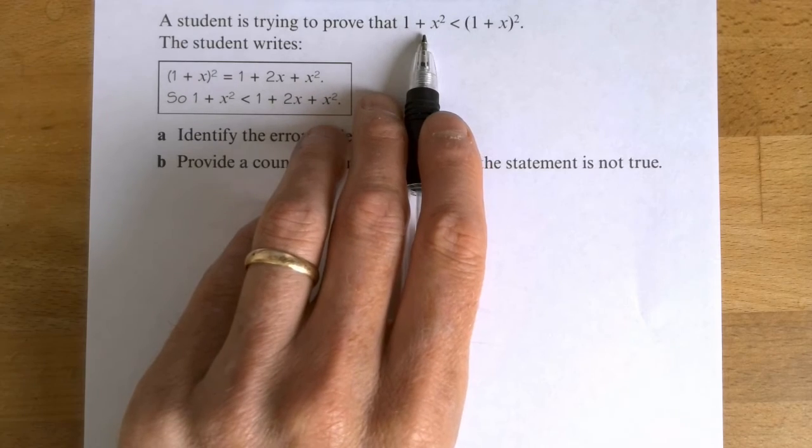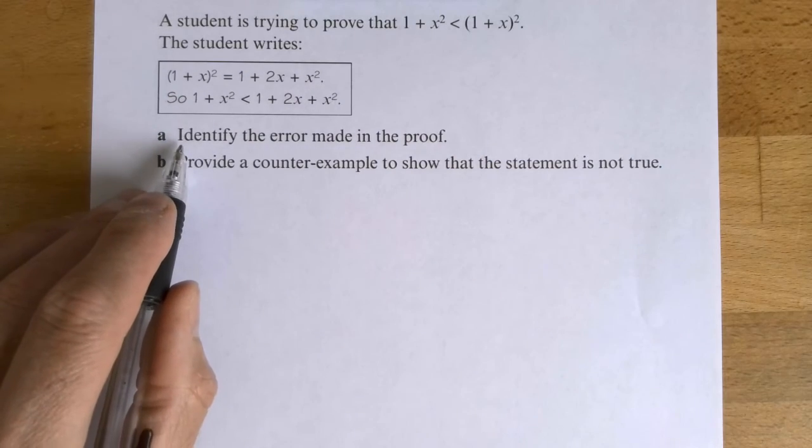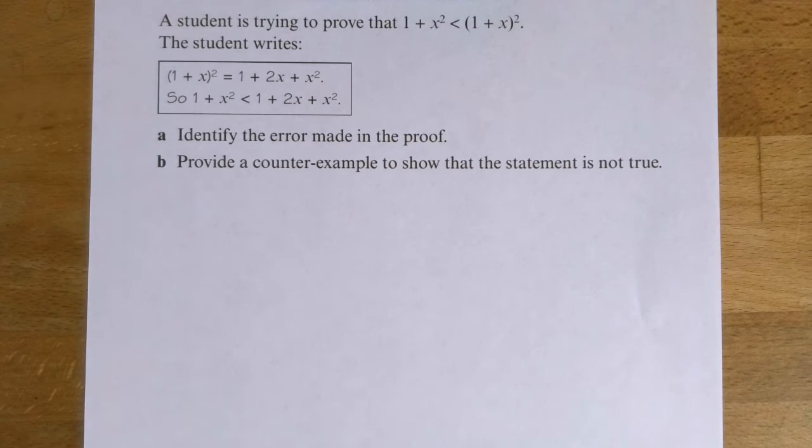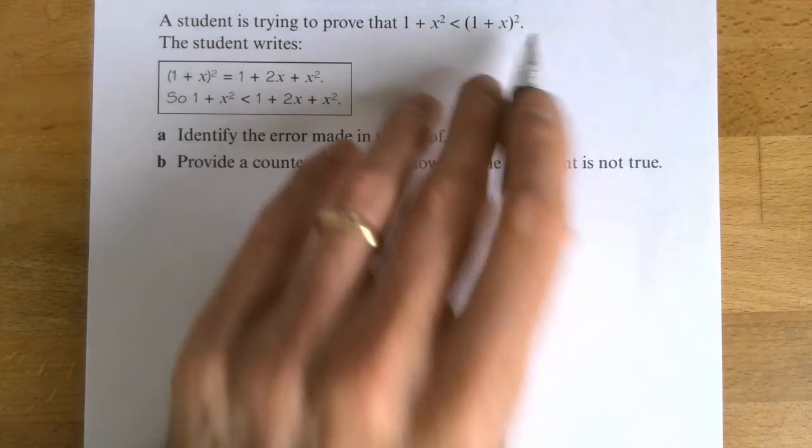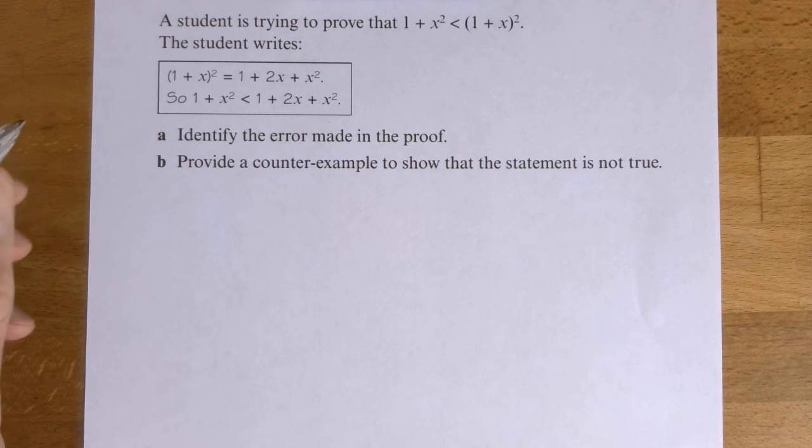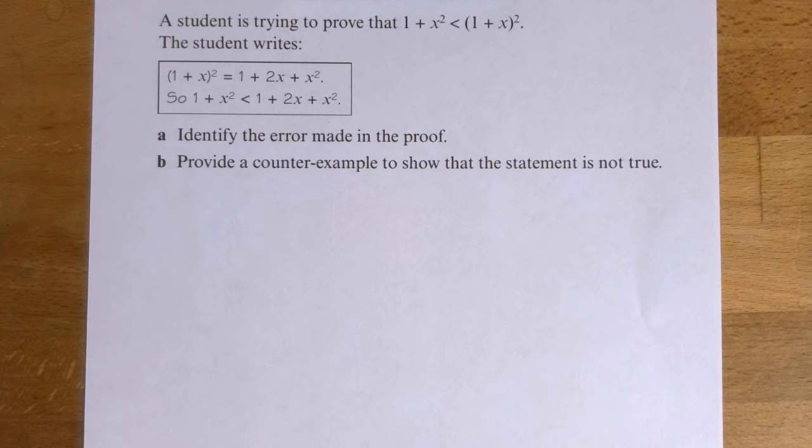So have a little think, what's the error and can you provide a counter example to show that this is not true? The student believes it is true. The student believes they have proved it is true. But can you see where they've gone wrong and find a counter example to show that it is not true?